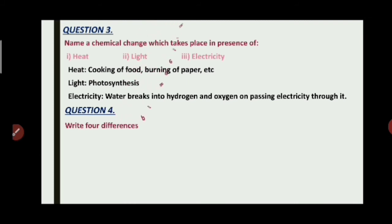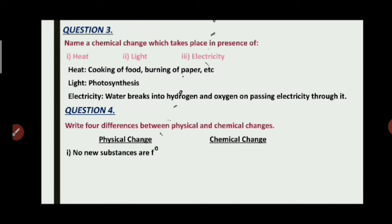Next question, write four differences between physical and chemical changes. The first point is, in physical change no new substances are formed. Whereas in chemical change, new substances with new properties are formed.